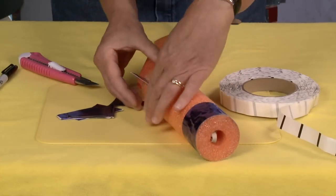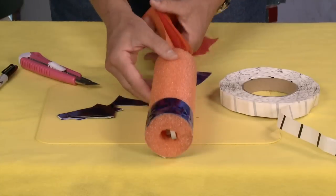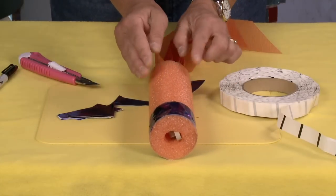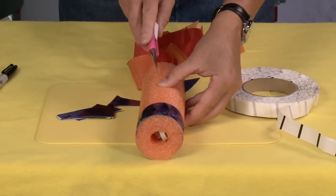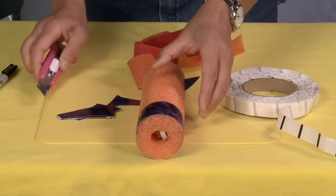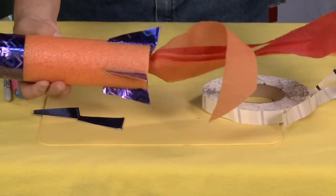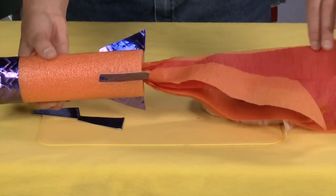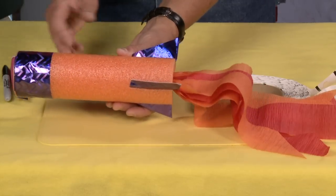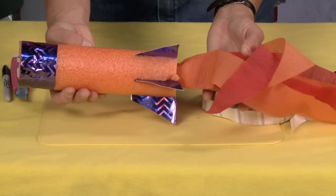There you go. Just give it a little squeeze. And then rotate it 90 degrees. And repeat this pattern. And there we have our fabulous rocket ready to shoot.